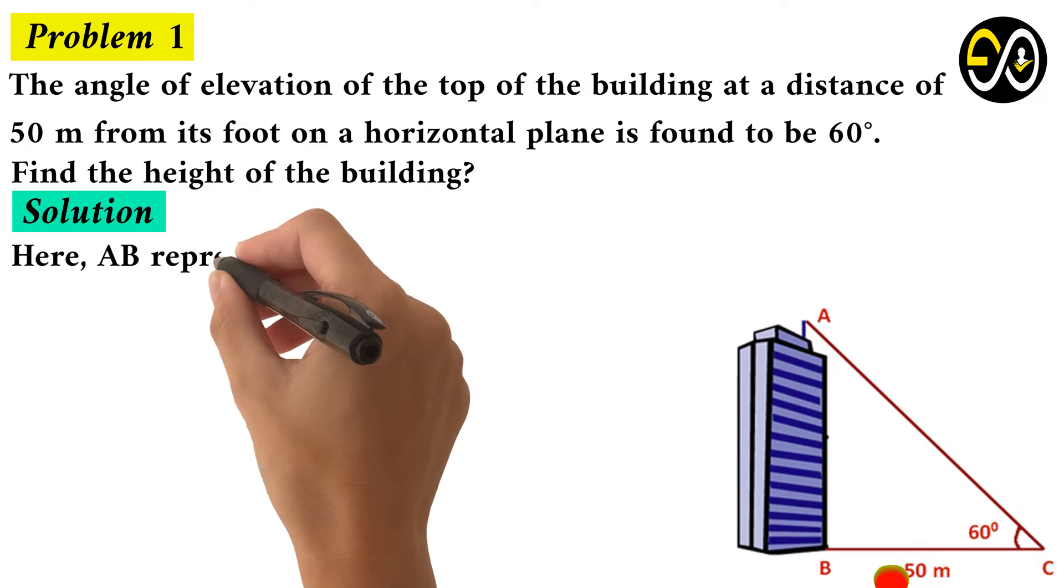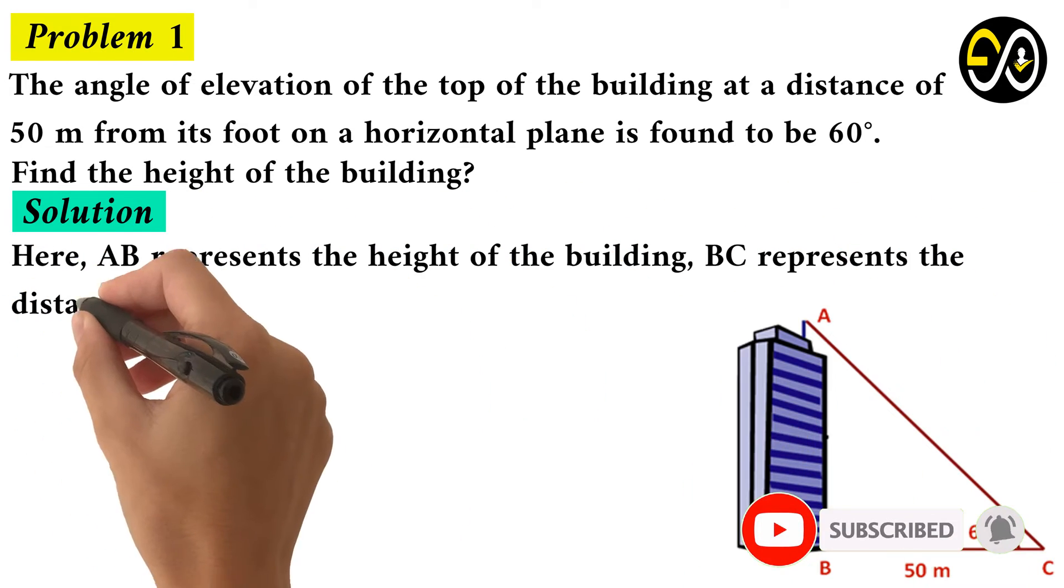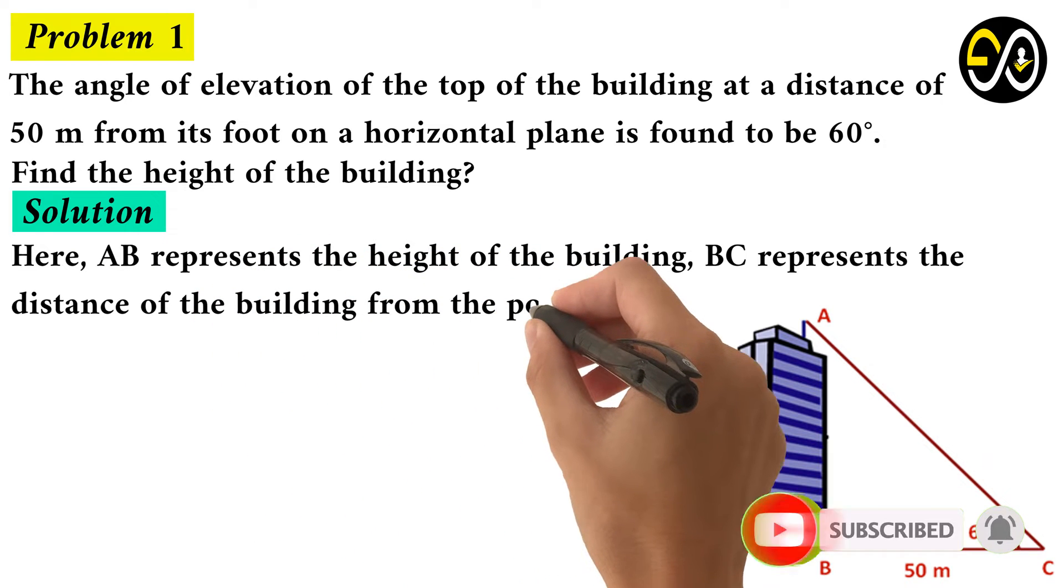Here, AB represents the height of the building. BC represents the distance of the building from the point of observation.